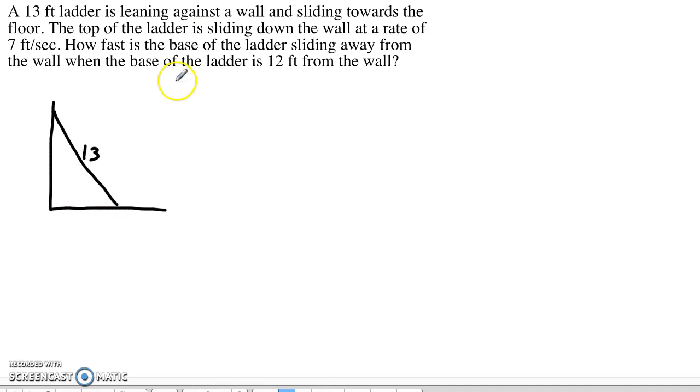And we have to define some variables. They're talking to us about the rate that the ladder goes down the wall. That's a rate of 7 feet per second. So we're going to need a variable for how high the ladder is. And they're also asking us about the rate when the base of the ladder is 12 feet from the wall, how fast it's sliding away. So that means we'll need a variable for how far the ladder is from the wall.